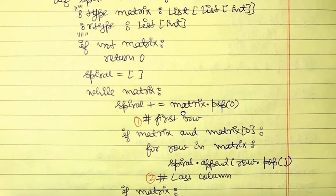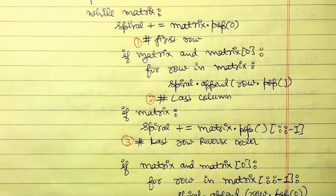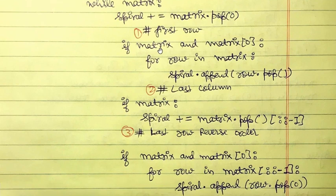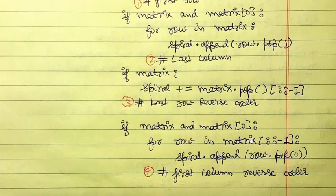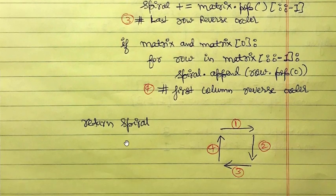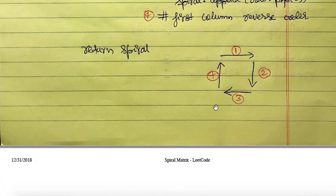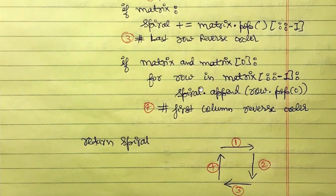We keep doing this while the matrix is non-empty — that's why we use `while matrix`. After every pop operation, the matrix can become empty at any time since we have no control over the shape. We must check at each step whether the matrix has elements. For steps two and four where we operate on rows, we check `matrix[0]` to ensure at least one row exists. The four steps are: step one left-to-right, step two top-to-bottom, step three right-to-left, step four bottom-to-top.